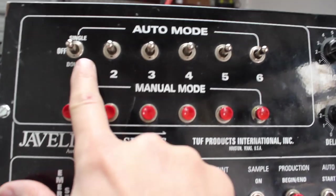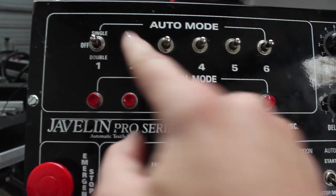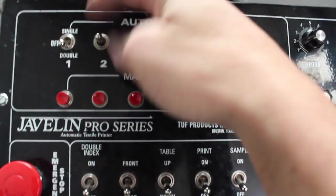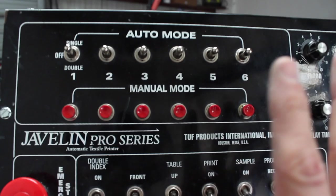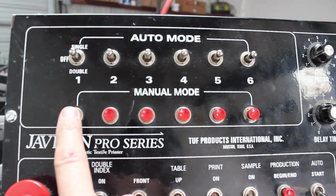These switches here are to activate your heads. You have either a single or double stroke, so you can just flip those up or down. In the center it's not doing anything - the print head is not printing.